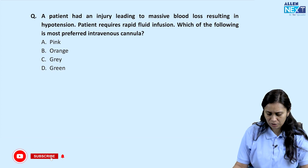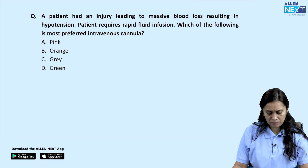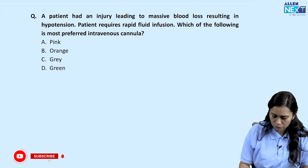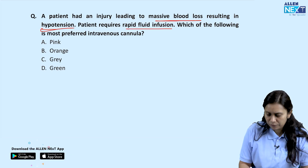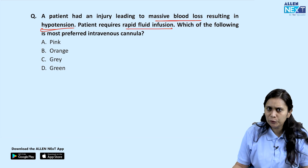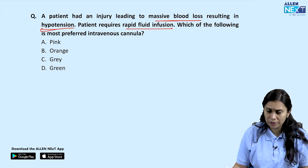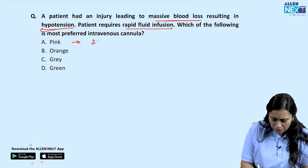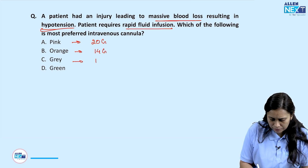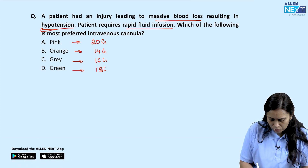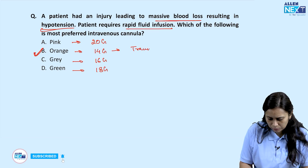Next question: a patient had an injury with massive blood loss resulting in hypotension and requires rapid fluid infusion. Which IV cannula is most preferred? We need a wider bore cannula for fast fluid delivery. Among the options: pink is 20 gauge, orange is 14 gauge, gray is 16 gauge, green is 18 gauge. The widest — and therefore the answer — is orange.